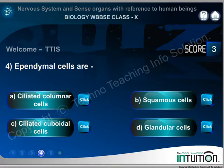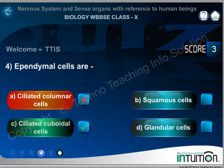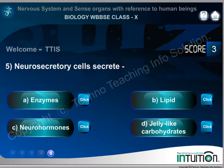Question 4. Ependymal cells are: A. Ciliated columnar cells. B. Squamous cells. C. Ciliated cuboidal cells. D. Glandular cells. Wrong answer shown; right answer is C. Ciliated cuboidal cells.